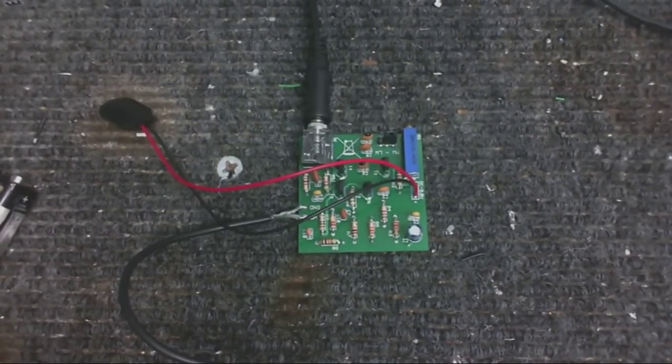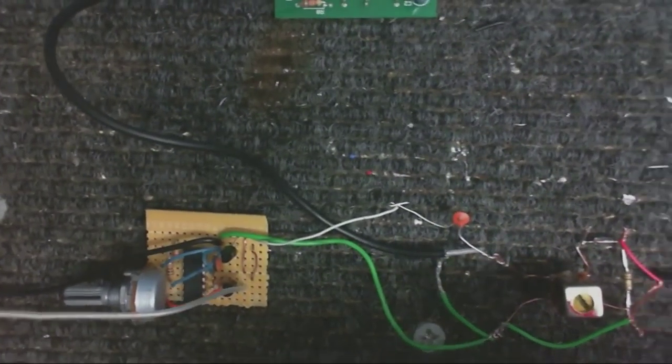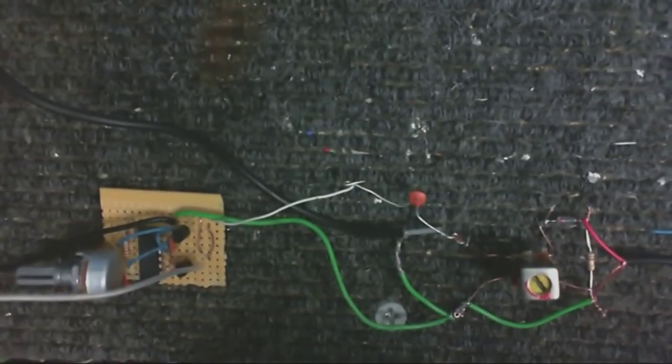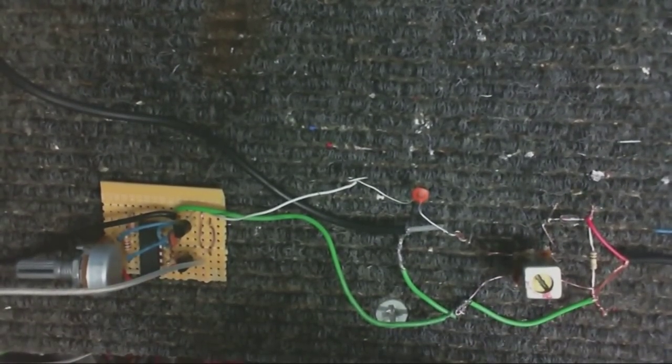So that's the radio station, and down here, let me just move the camera over a little bit, is the receiver circuit. Now, it's a very, very simple, very basic receiver circuit.